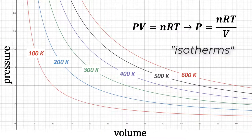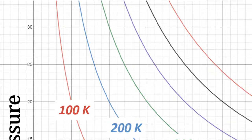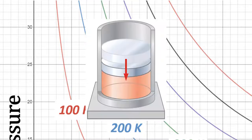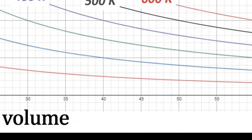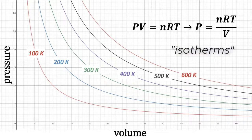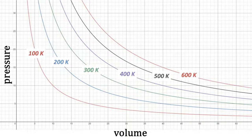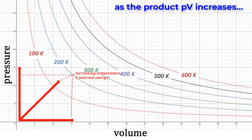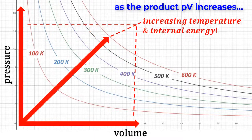You're looking at 6 different isotherms simultaneously plotted on a single PV diagram. Look at the 100 K isotherm: towards the top left, pressure is large and volume is low — this is when the piston is near the bottom of the cylinder. At the far right bottom, pressure is low and volume is high, corresponding to the piston being at the top. No matter where you are on this isotherm, the temperature is 100 Kelvin. You also see the 200, 300, 400, 500, and 600 K isotherms. One really helpful takeaway: as you go upward or rightward, temperature increases and so does internal energy.